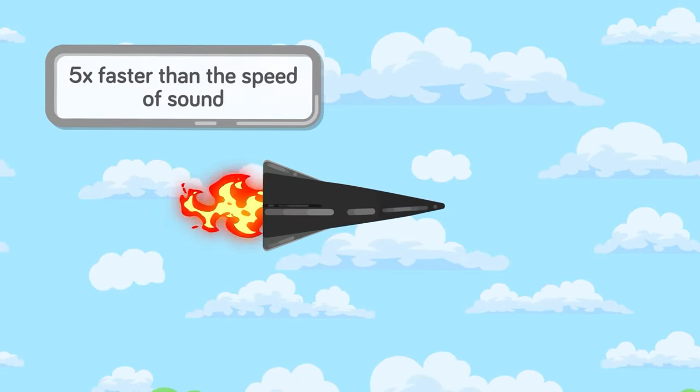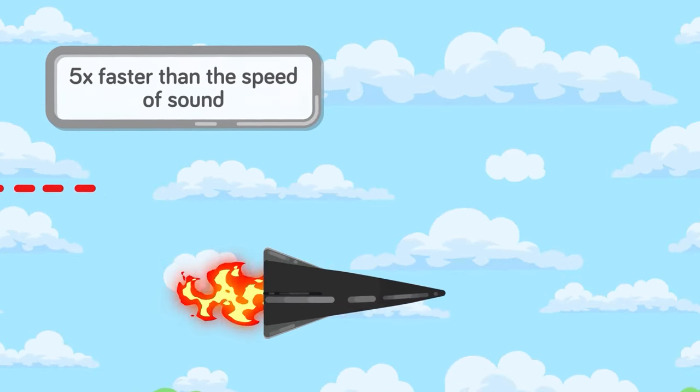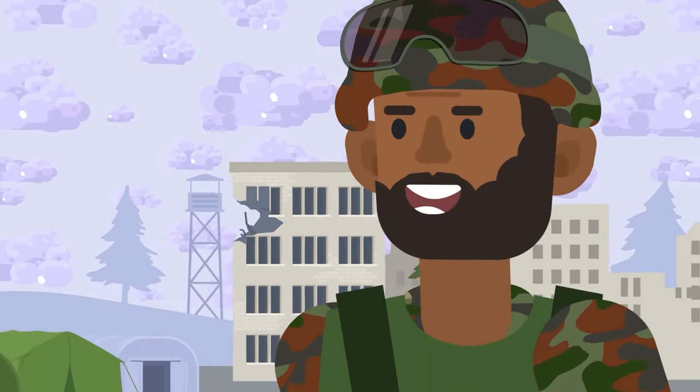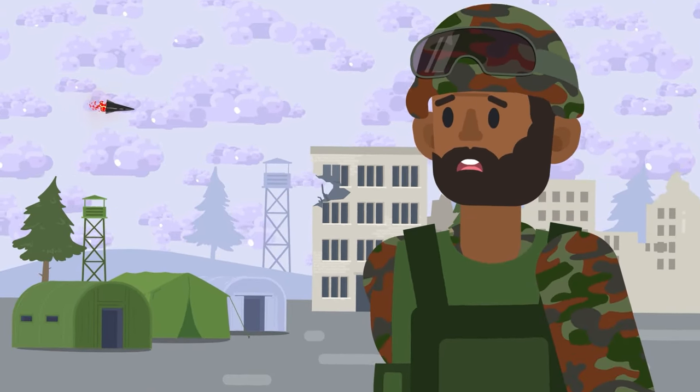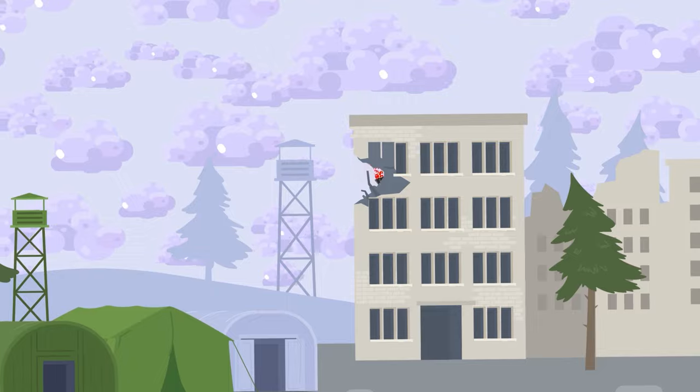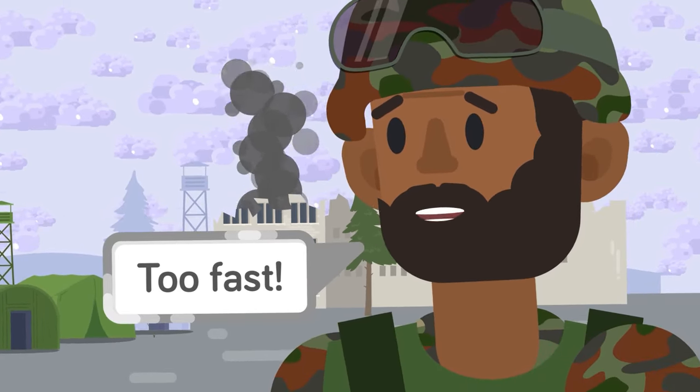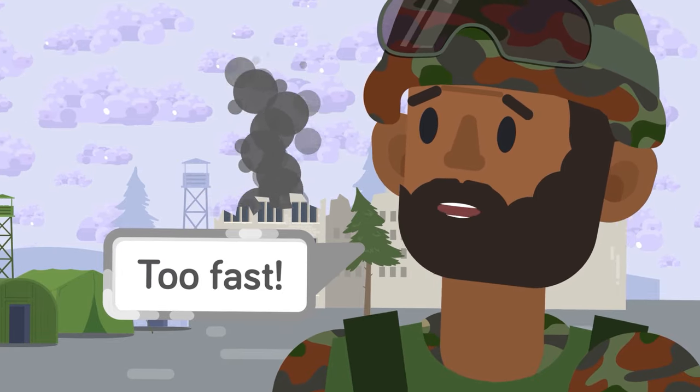A missile flies through the air at over five times the speed of sound. It swerves to avoid countermeasures that try to stop it. The target is within sight. The hypersonic missile adjusts its course one last time before altering its angle of descent and racing toward a high-priority military target. This is the fastest missile in the world, and nothing can stop it.